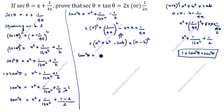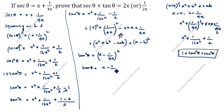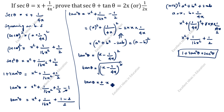So tan squared theta equals x minus 1 by 4x, the whole square. Taking the square root on both sides, the square and root cancel, giving tan theta equals plus or minus x minus 1 by 4x.